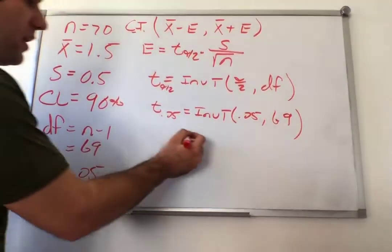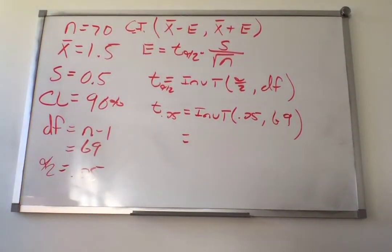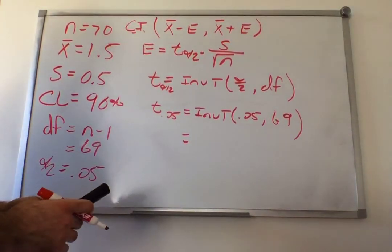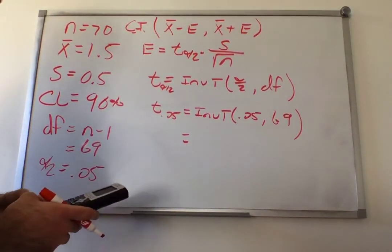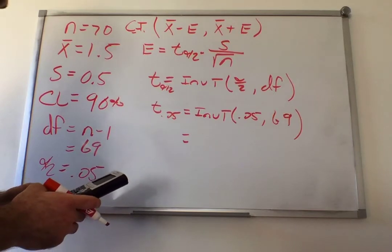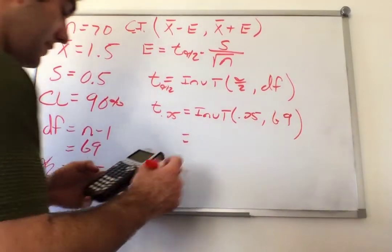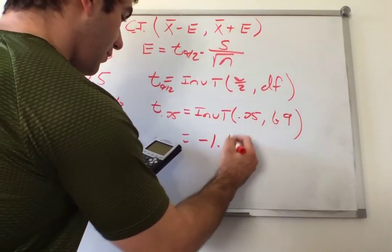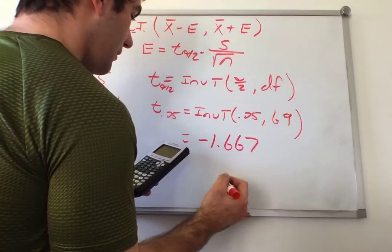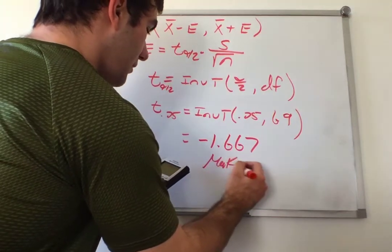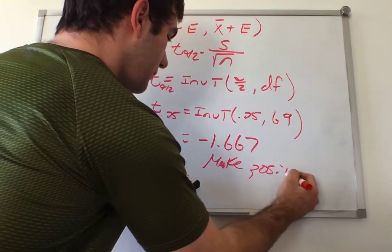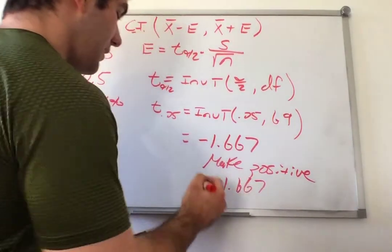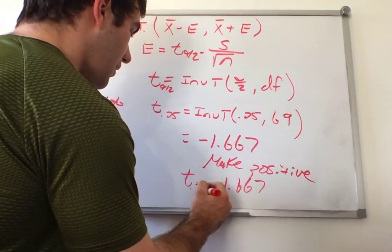We plug into the calculator: inverse t of 0.05 with degrees of freedom 69. The result is negative 1.667, and we make it positive. So t of 0.05 equals 1.667.